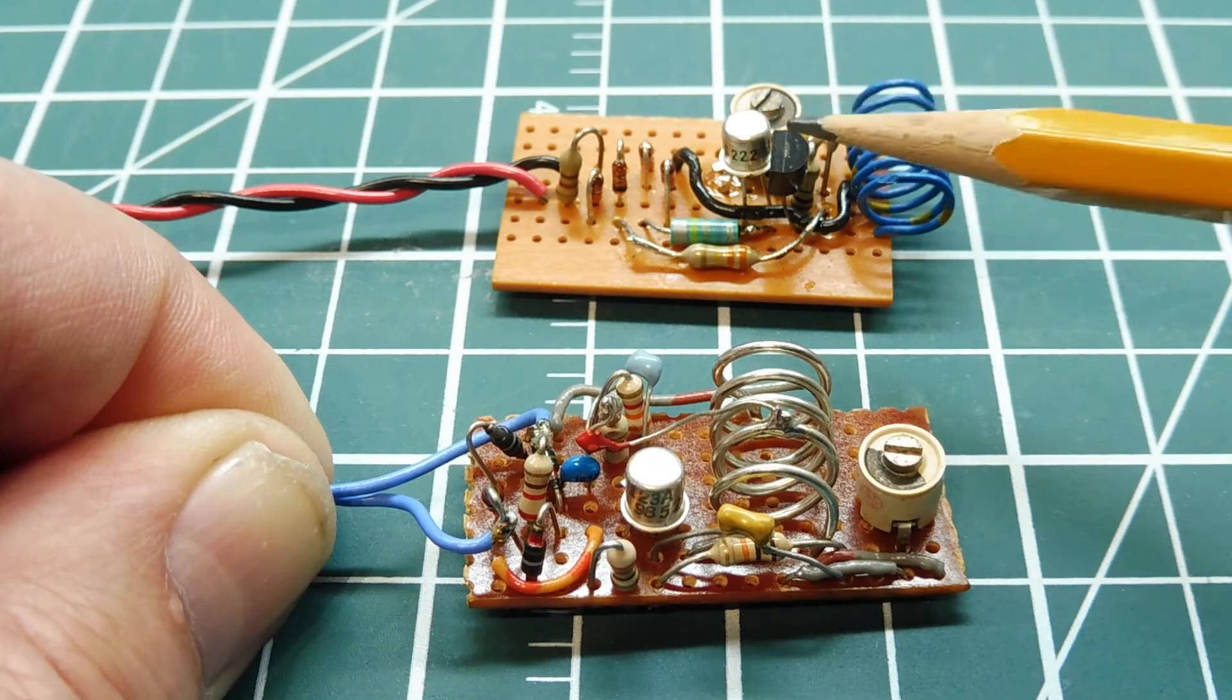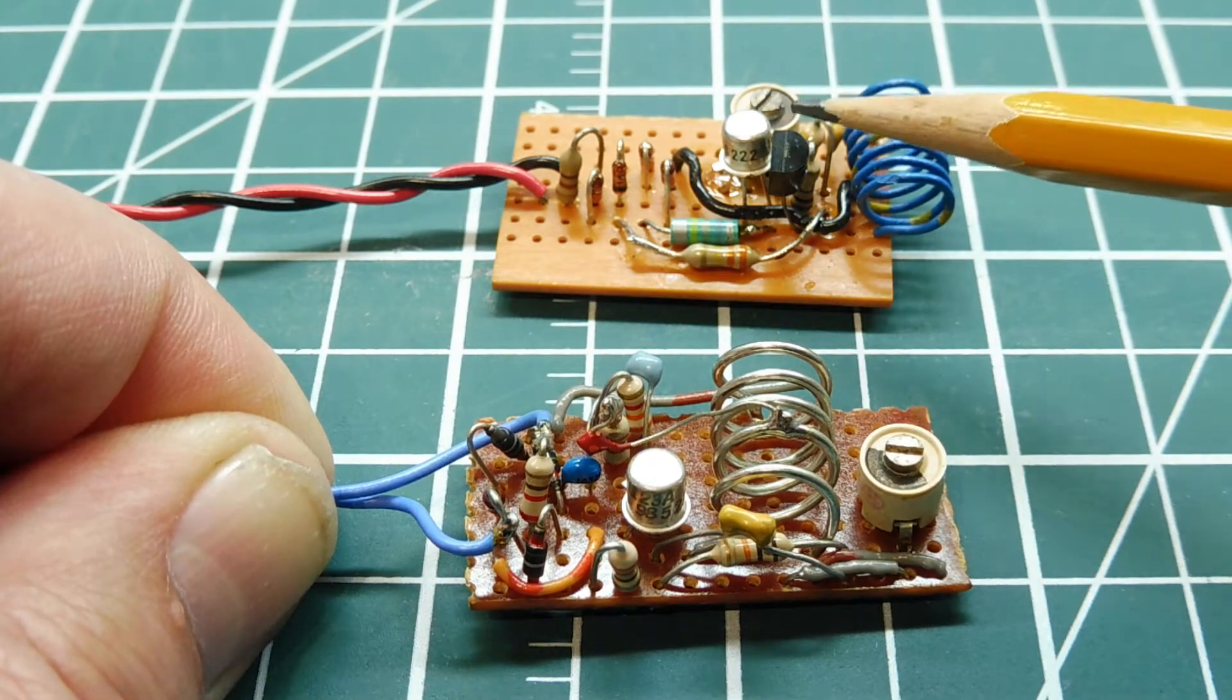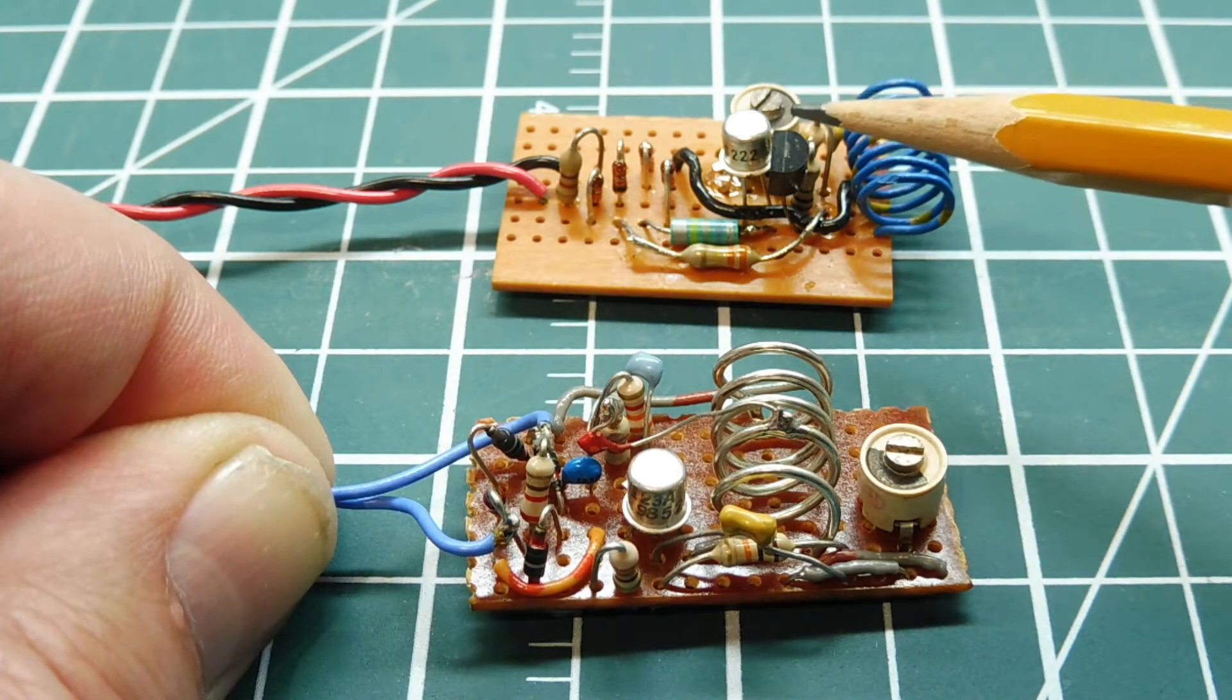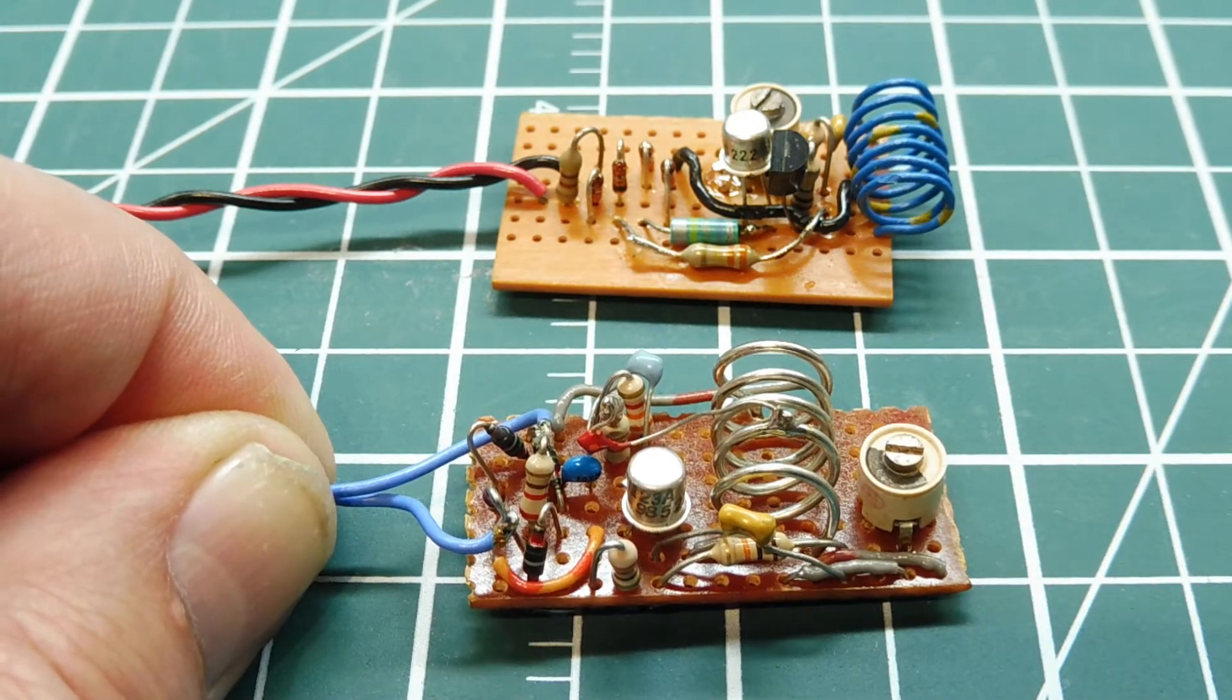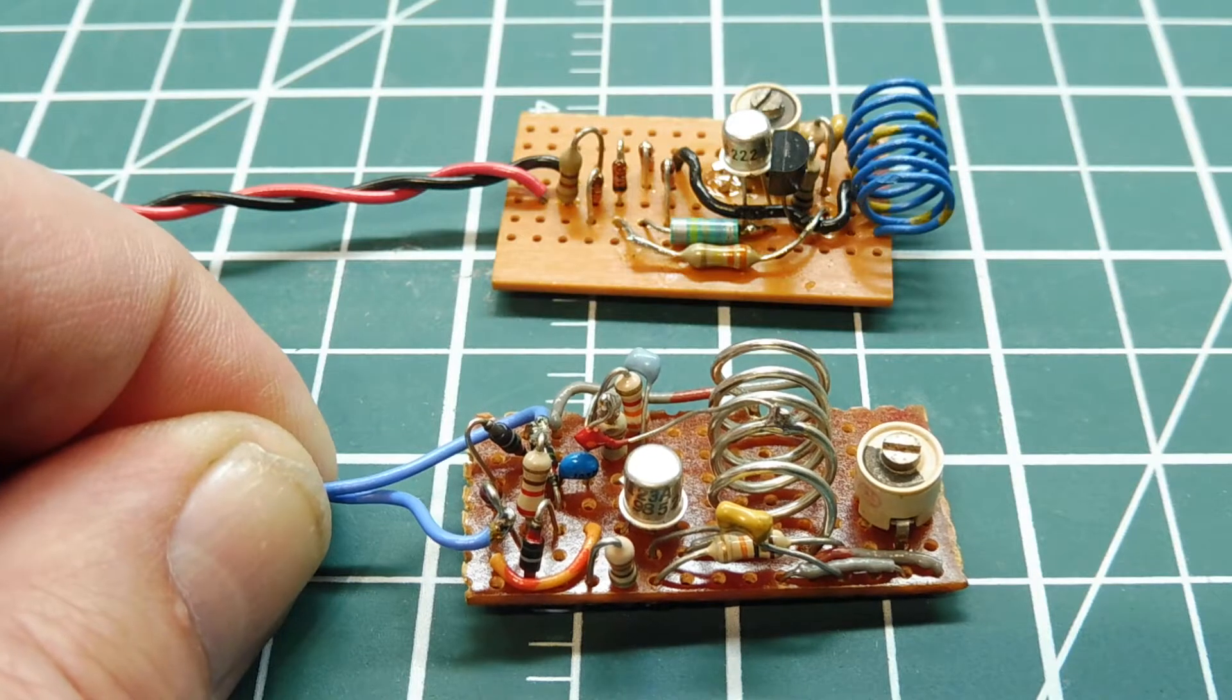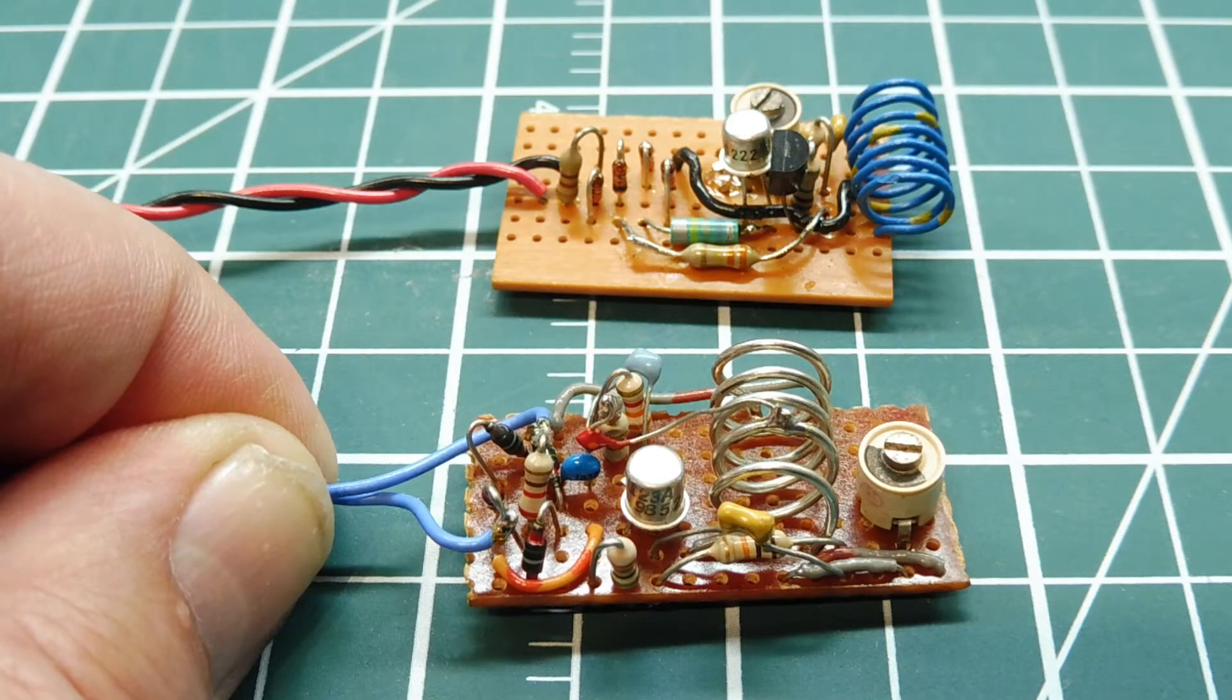This one here is a different design. It uses a dual gate MOSFET for the oscillator and a variactor diode to modulate the oscillator. Both of these designs go in line to the phone line, so it gets its power from the phone line so you don't need any external batteries.